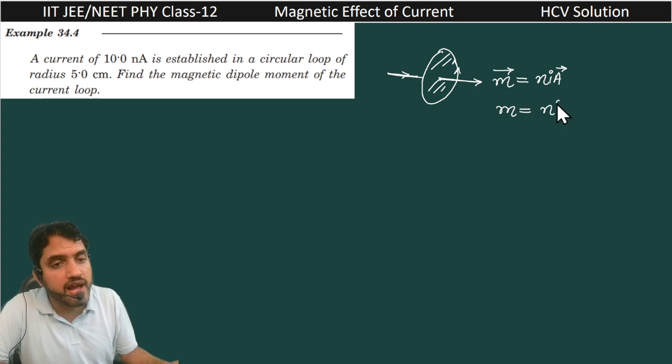And this a can be written as pi r square. And here only one turn is there so n equal to one. So m, that is magnetic dipole moment, is equal to i into pi into r square.